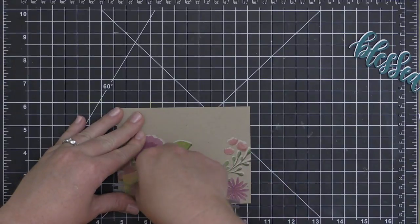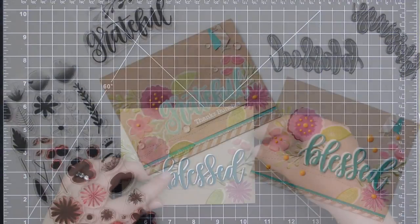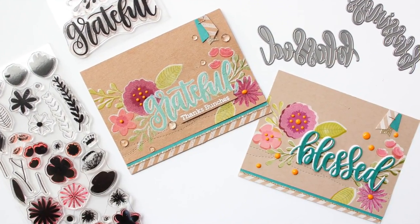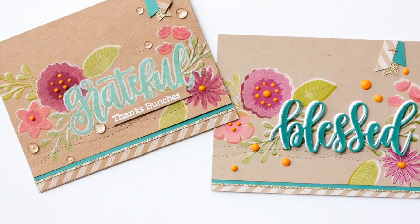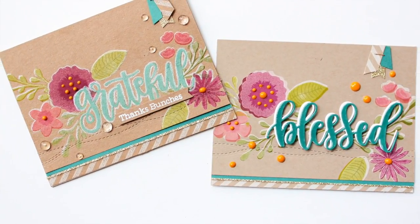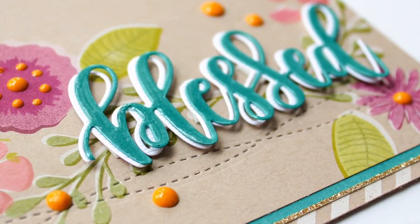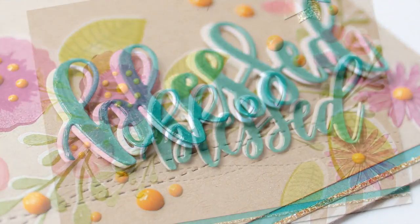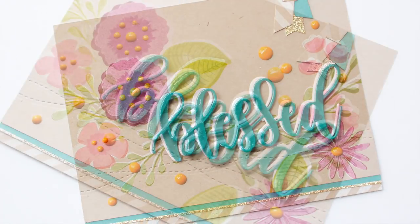I added that stitch detail along the bottom, and then I'm going to add my sentiment to this card front using a little bit of foam adhesive. I get a similar look—it's not exactly the same, but for those of you who don't want to take the time to mask, it might be a good alternative for you. I did end up embellishing it with those Nuvo drops that I created on my craft mat that I showed you earlier.